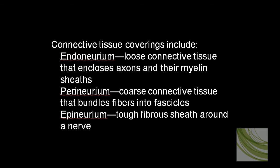That would be the endoneurium, which is a loose connective tissue that encloses an axon with their myelin sheath. We have perineurium, which is a coarser connective tissue that groups individual nerve fibers inside their endoneuriums into fascicles. And then the entire nerve is encapsulated in a really tough fibrous sheath around the outside — the epineurium. So we'll see all three of these connective tissue coverings.